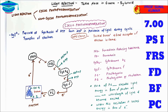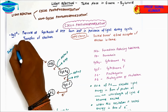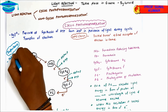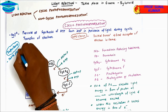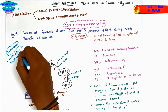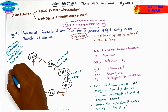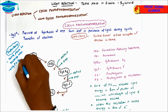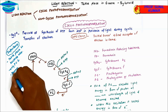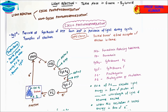Two most important points: cyclic photophosphorylation also takes place in photoautotrophic bacteria, and only photosystem one is involved, with the wavelength of light absorbed being 700 nanometers.